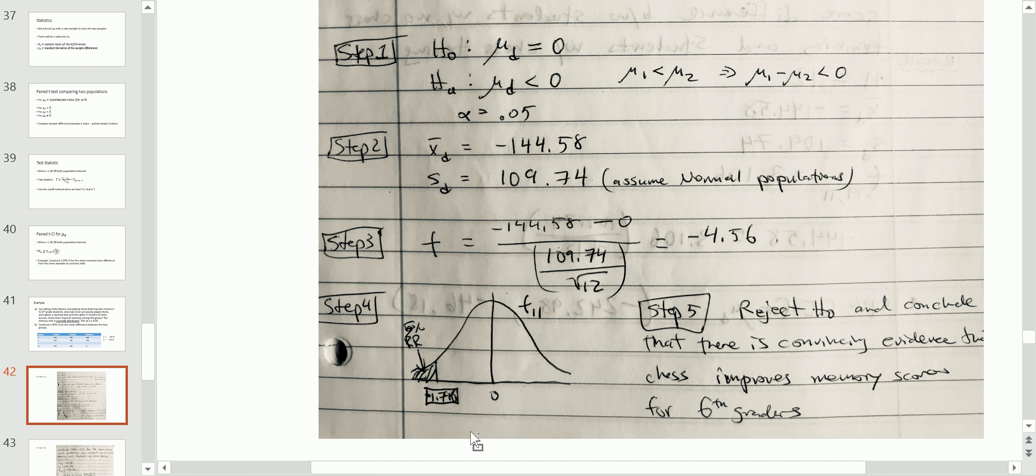So I set up my rejection region on the left tail of a T distribution with n minus one degrees of freedom. So that's 11. I get my cutoff, which was, I believe, negative 1.798. So get this from the table. Here's the cutoff. Then final step. My test statistic is definitely inside the rejection region. Therefore, I reject H_0 and conclude that there is convincing evidence that chess improves memory scores, at least for this population of subjects that we studied, which was sixth graders.